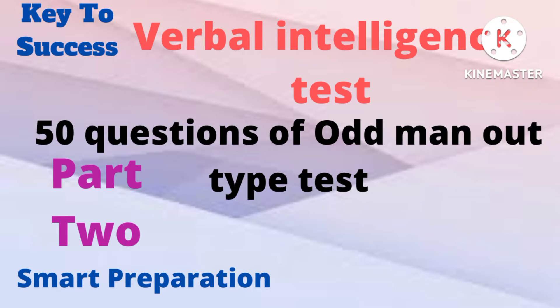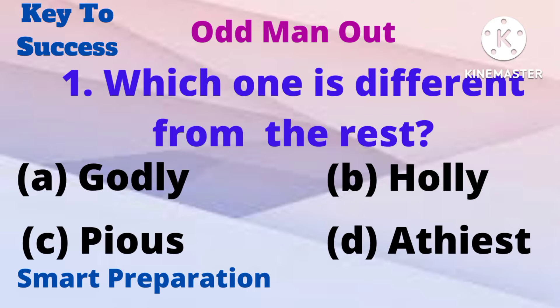Verbal intelligence test: the odd man out type questions, second part. Which one is different from the rest? A) godly, B) holy, C) pious, D) atheist.